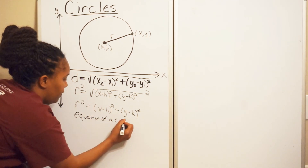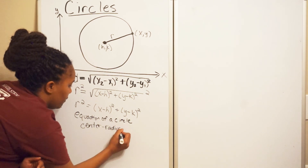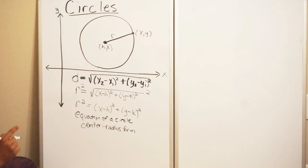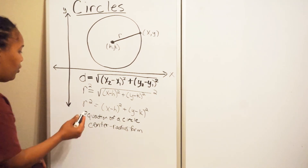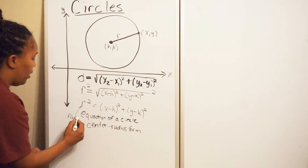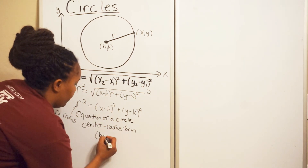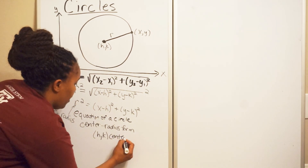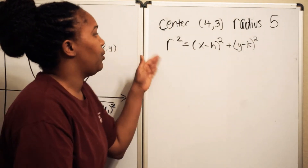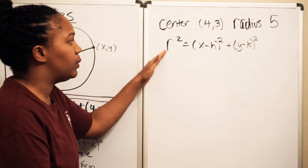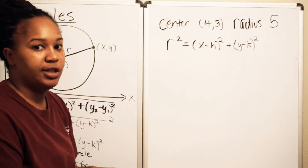This formula, which I simply derived from the distance formula, is the equation of a circle. The form is called center-radius form. It's called that because if you have an equation in this form, you can easily identify the radius — which is r, not r squared — and the center, which is (h, k). That's how you get the center-radius form of the equation of a circle.